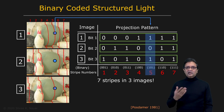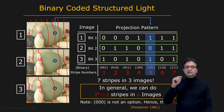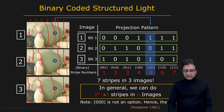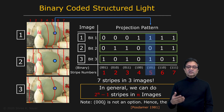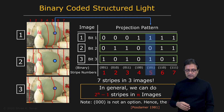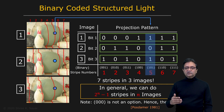In general, we can handle two to the power of N minus one stripes using just N images. The minus one is because we exclude the all-zeros code, which corresponds to all stripes being off and adds no information. So with eight images, you can handle two to the power of eight, which is 256 minus one — 255 stripes. That's a reasonable number of images, especially with a fast projector and a fast camera.